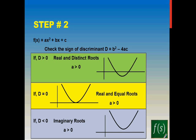The next step: find the discriminant. We know that the discriminant is given by b² − 4ac. If your discriminant is greater than zero, the roots are real and distinct. In that case, your graph will cut the x-axis at two places.